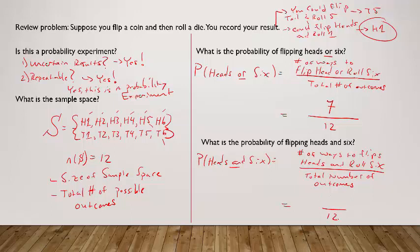Well, again, the total number of outcomes is 12. What are the ways you can get both a head and a six? Well, the only way to get a head and a six is this one right here: H6. That's the only thing that is both a head and a six. So this is just one out of twelve. Notice the subtle difference between the and and the or for this type of statement.